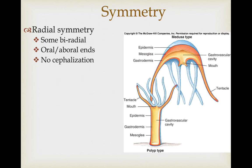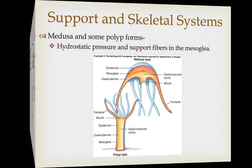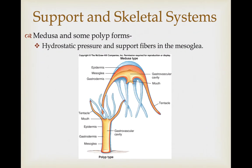Most cnidarians show radial symmetry; some technically are biradial in symmetry. They have an oral end where the mouth is, and the opposite end is the aboral end—'ab' in front of a word means the opposite. There is no clear head in cnidarians, so they don't show cephalization.